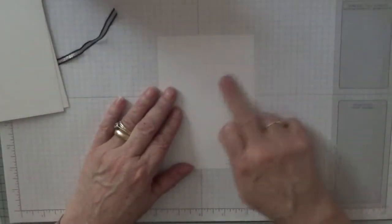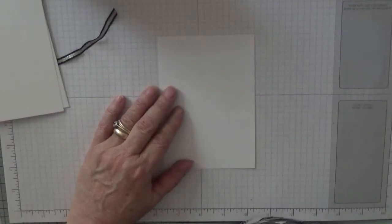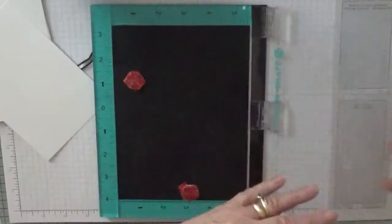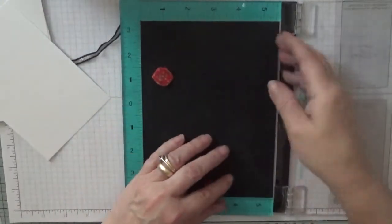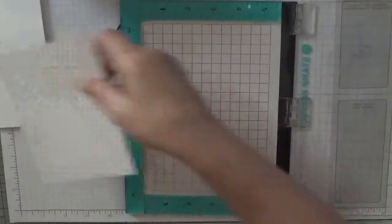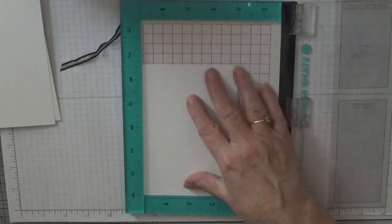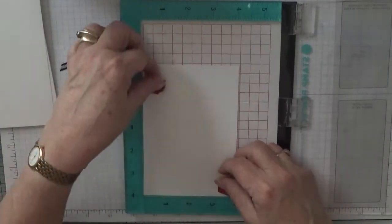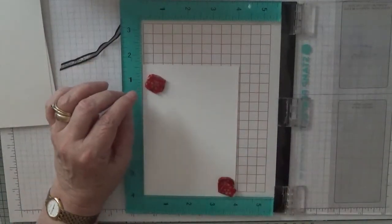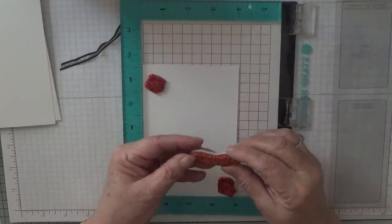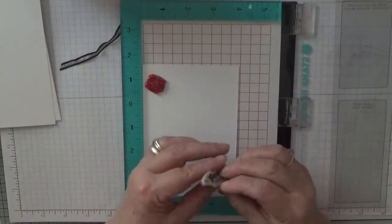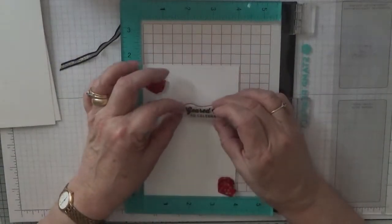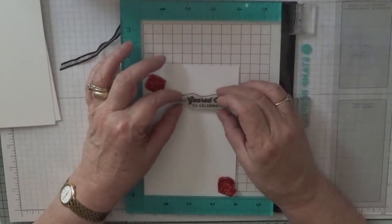First of all, we're going to do the sentiment. Now I used my stamp positioner for that because I wanted it really dark. So that means inking it up two or three times. So I have it here, all geared up to celebrate you. I'm going to put it there.